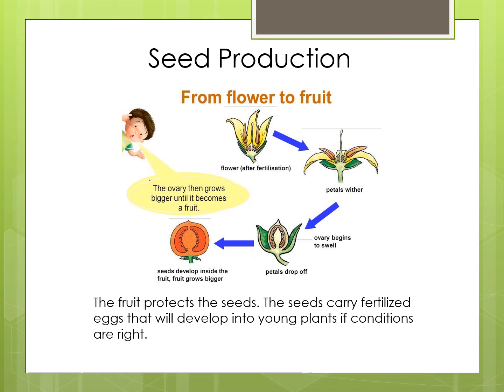Wither means the petals will drop off. Second, the ovary develops into a fruit while the ovules inside the ovary develop into seeds. The fruit and the seeds together are formed. A fully developed fruit with seed is formed.